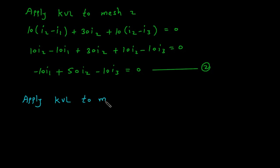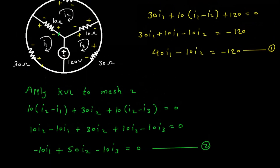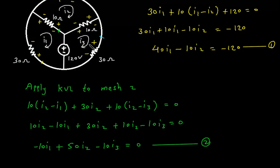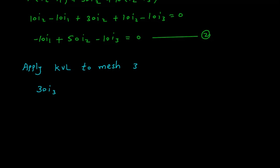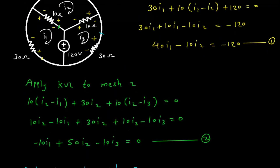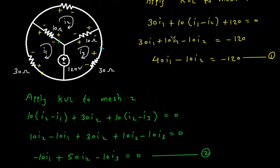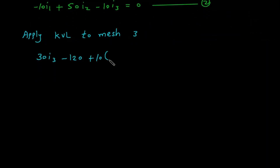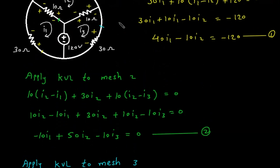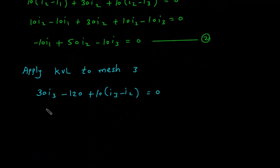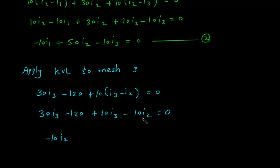Now we will apply KVL to mesh number 3. Starting from here: plus 10(I3 minus I2), plus 10(I3 minus I2), plus 10(I3 minus I2) equals 0. This simplifies to minus 10I2 plus 40I3 equals 120. Let's call this equation number 3.